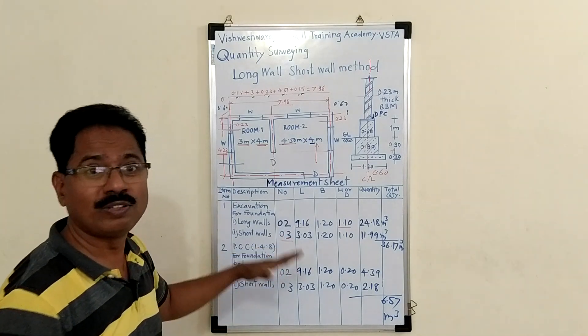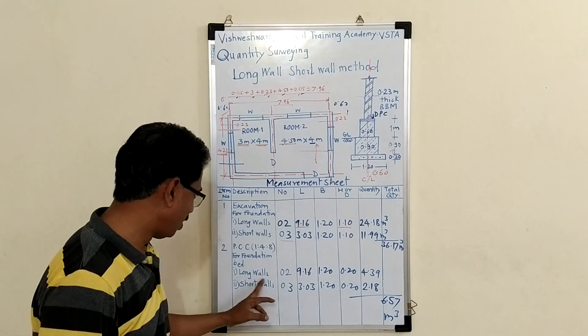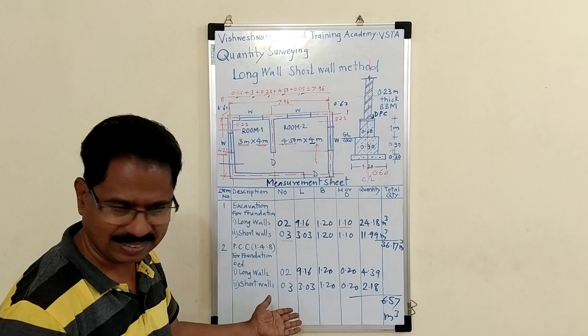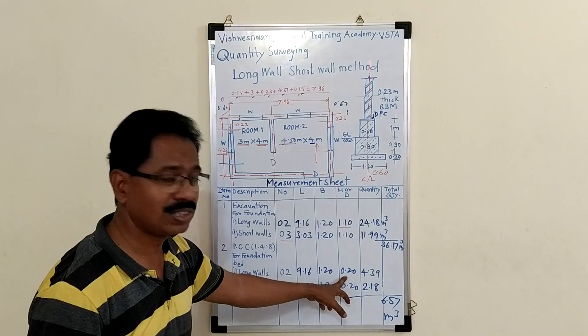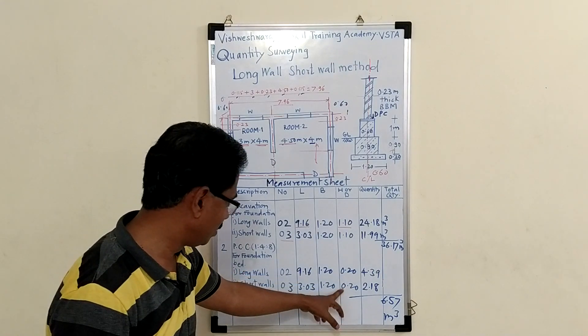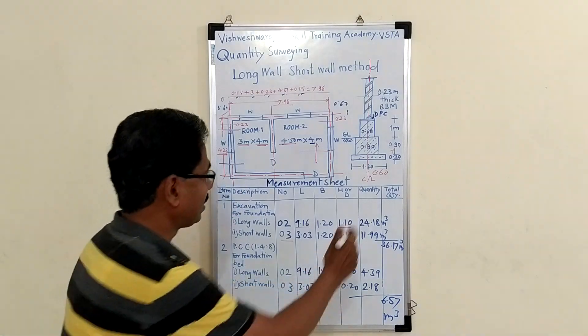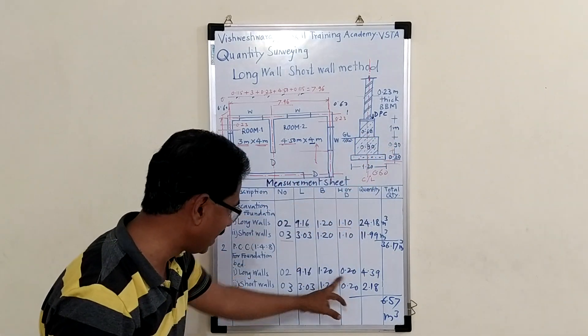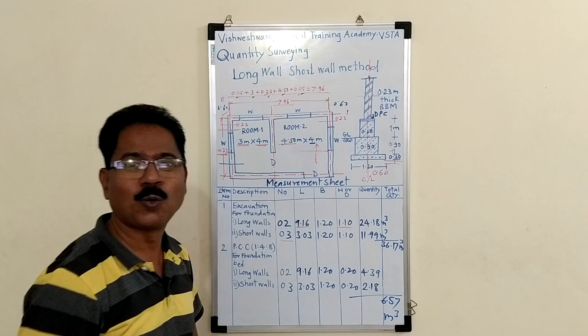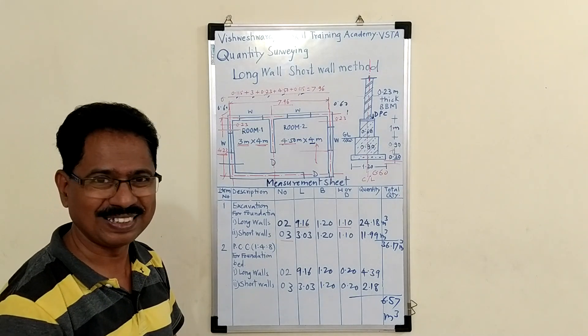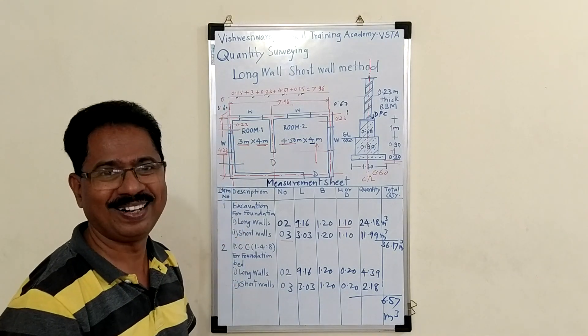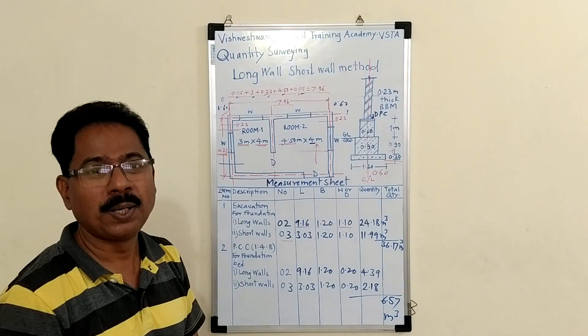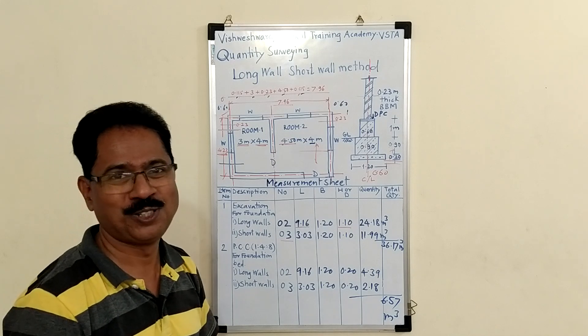In this way you can calculate quantity of PCC also. Long wall, short wall. Of course length will be the same, width same. Just record the thickness of PCC, thickness of PCC given in section: 0.20. So this is the method of calculating quantities by long wall short wall method.